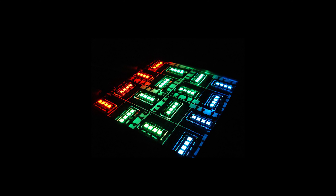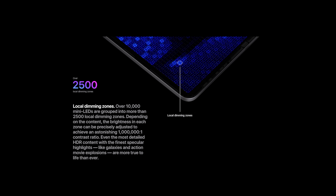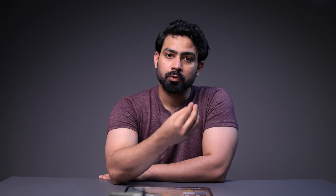OLED panels are self-emitting diodes, meaning each pixel emits light individually when current is applied. Mini LED, on the other hand, is a backlit display — a refined form of LCD. Underneath the panel, there are many tiny LEDs. Apple claims the iPad has 10,000 Mini LEDs and 2,500 local dimming zones, so different zones can be independently controlled.